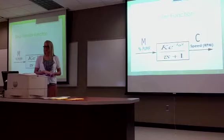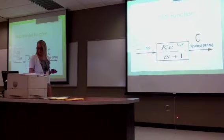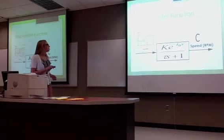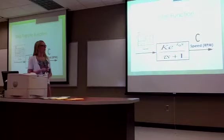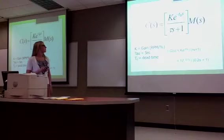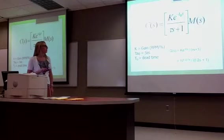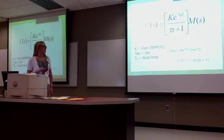The step function is shown here, and then it goes into the transfer function, which comes out in speed in RTMs. Here is the transfer function. I have here our values for our gain — it's about 17 for the gain, negative 0.1 for the dead time, and 0.2 for the tau.